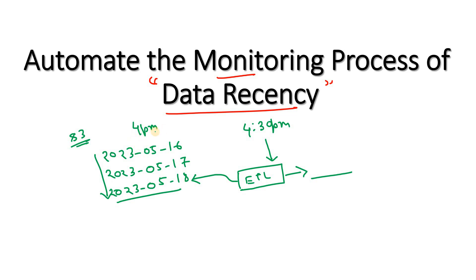As per the discussion with the source team, by 4 PM the data will be available in the latest partition. If they are not able to bring the data by at least 4:30 PM, all the downstream jobs, tasks, or processes which rely on the latest partition data will be impacted. To ensure subsequent tasks don't get any issue, the source team must make sure data is available on time. But in production systems we might face challenges — maybe the source team itself is getting data late, and as a result our production ETL job might fail.